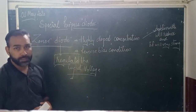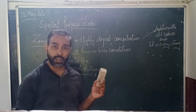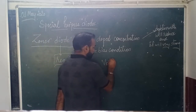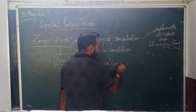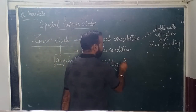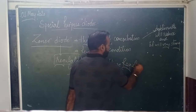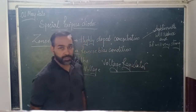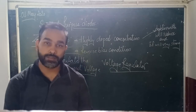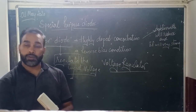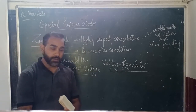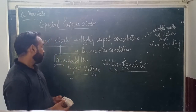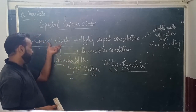The zener diode is used as a voltage regulator for the regulation of the input voltage. This is a very important topic and it is a very important examination question as well: 'Explain the working of a zener diode as a voltage regulator.' We will discuss this as the video proceeds.